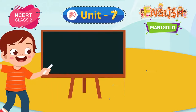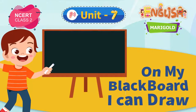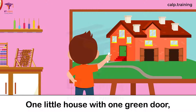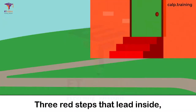On my blackboard I can draw: one little house with one green door, two brown gates that open wide, three red steps that lead inside.